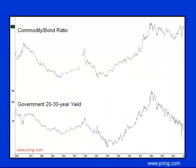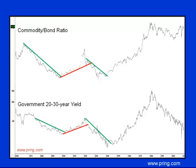Finally, this chart shows that secular trendline violations in the commodity-bond ratio have usually coincided with those in the 20-year government bond series. Currently, the secular trend for yields is still down, but if the ratio does break above the upper area of its 30-year trading range, the odds of a reversal in yields would be overwhelming.